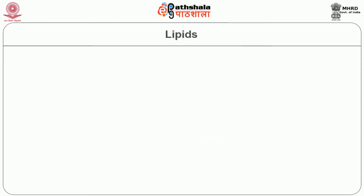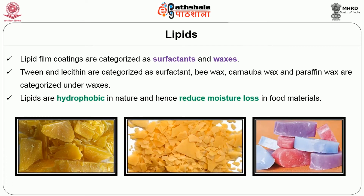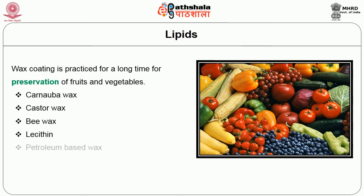The next category is lipids. Lipid film coatings are categorized as surfactants and waxes. Lipid film and lecithin are categorized as surfactants, while beeswax, carnauba wax, and paraffin wax are categorized under waxes. Lipids are hydrophobic in nature and hence reduce moisture loss in food materials. Wax coating has been practiced for a long time in the preservation of fruits and vegetables. Carnauba wax, castor wax, beeswax, lecithin, and petroleum-based wax are commonly used for coating.